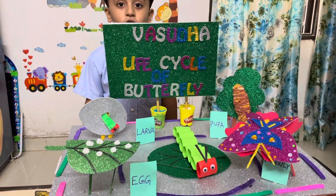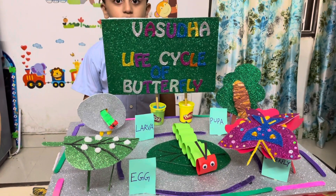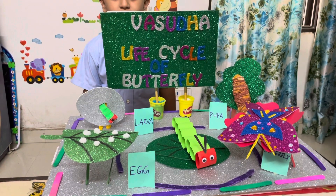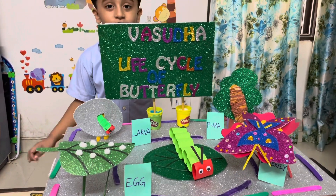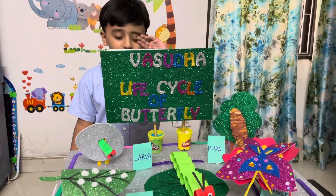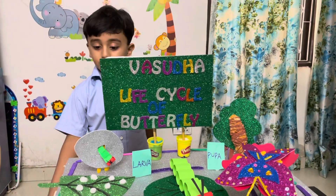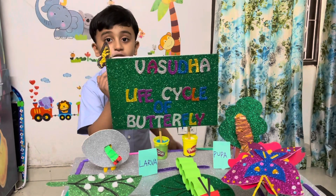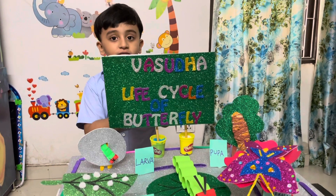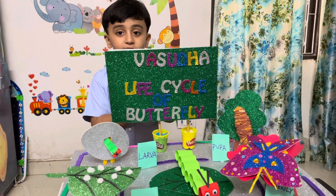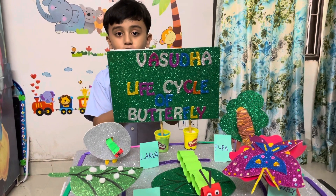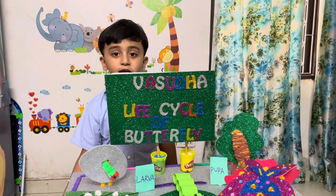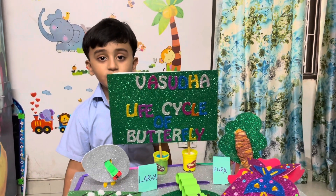The pupa undergoes a series of changes. After 15 to 20 days, a beautiful adult butterfly comes out of the chrysalis. When the butterfly comes out, its wings are small and wet.